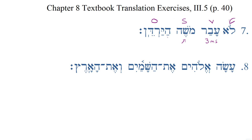Here we have a definite article, and it's the normal form: a he with a patach, and a doubling of the first letter of the word. In this case, the yod is the first letter of Yardayn and it's got a dagesh forte — it's doubled. That's the normal form of the definite article: he with a patach, plus doubling of the first letter of the word the article is attached to. So we have lo avar Mosheh ha-Yardayn — Moses did not pass over the Jordan.